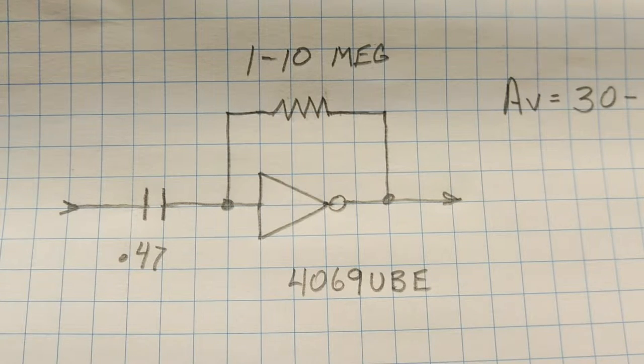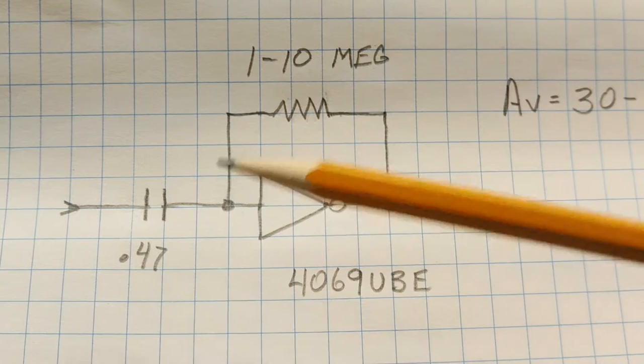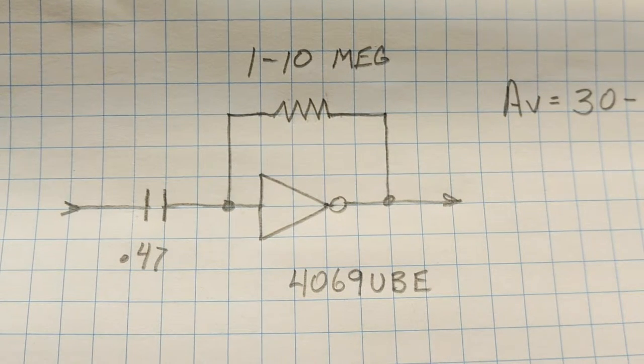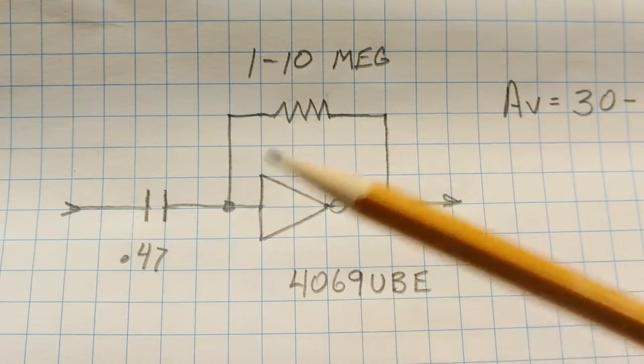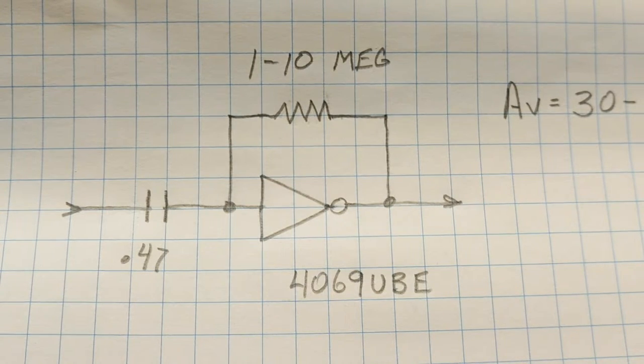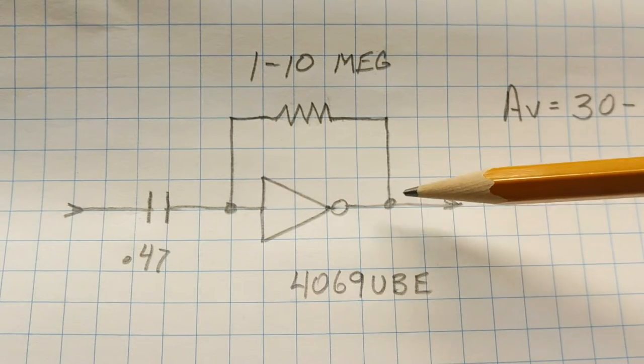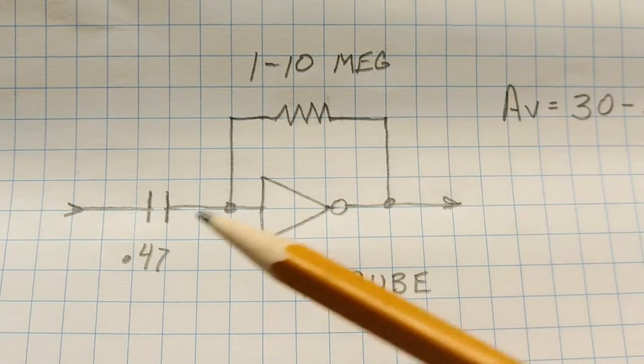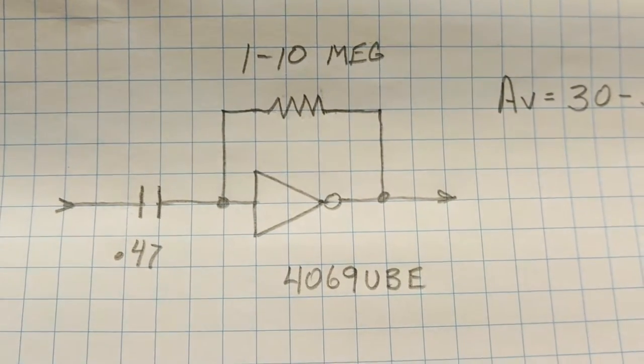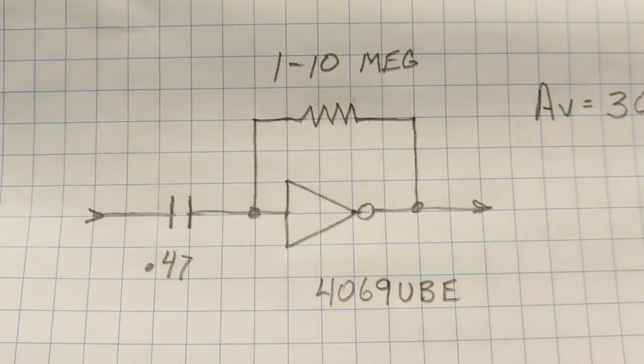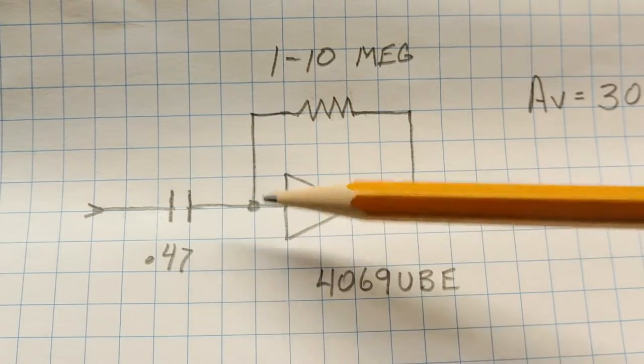To put this inverter into linear mode, we add a negative feedback resistor from the output of the inverter to the input. Now the value of this resistor can be from 1 to 10 megaohms. The value really doesn't matter that much because of the high input impedance of the inverter. Now because of negative feedback, the inverter will bias itself to an output voltage of 1 half the supply voltage. So at the output right here, we'll have 4 volts. So now we can add a signal to the input, and we'll get an amplified signal on the output. And the gain will be from 30 to about 50. Now we add this capacitor here to block any DC component that's driving the inverter so it won't interfere with the bias.